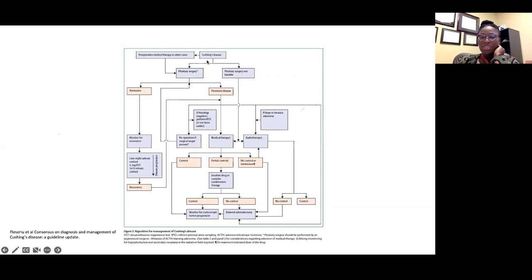In terms of labs they check—both for originally diagnosing and monitoring—you typically need at least two: late-night salivary cortisol, 24-hour urinary cortisol, and dexamethasone suppression tests. Before we get patients, all these labs have been done, again stemming from the importance of having good endocrinologists.